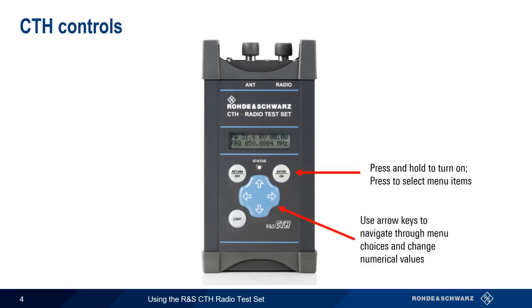The arrow or navigation keys are used to navigate through the menu choices and to change numerical values in the settings menus. To turn the CTH off, or to go back one menu level, use the Return/Off key.